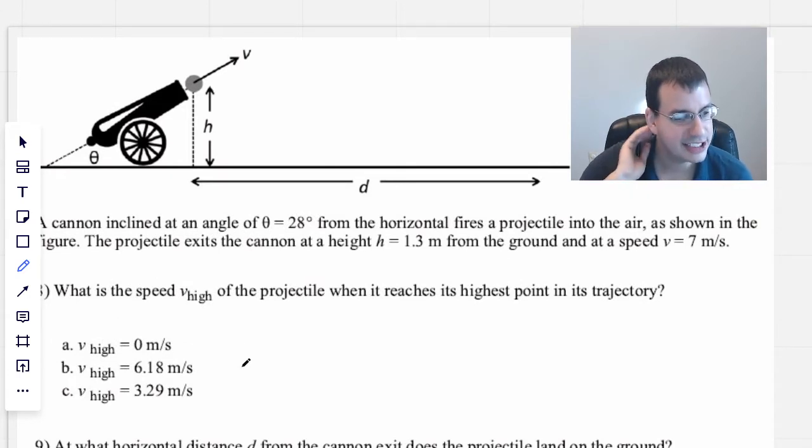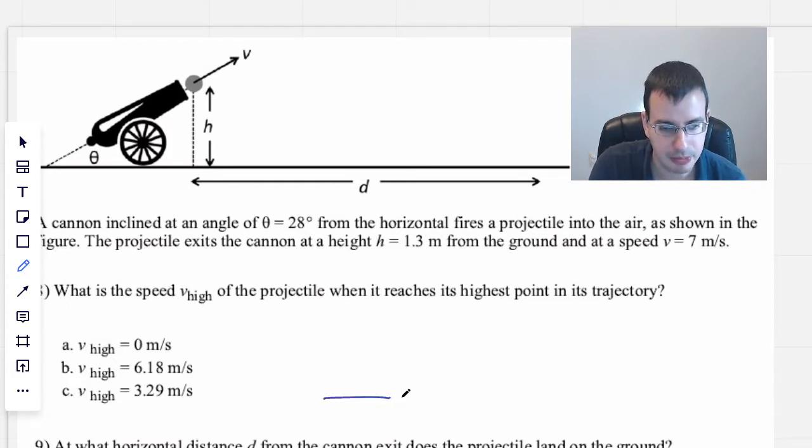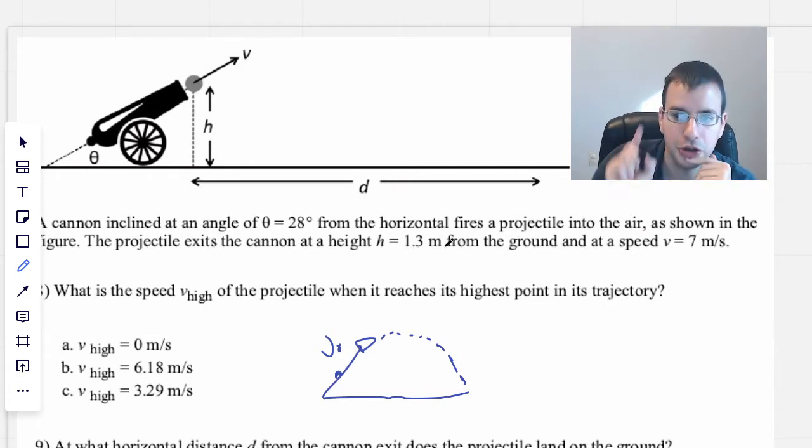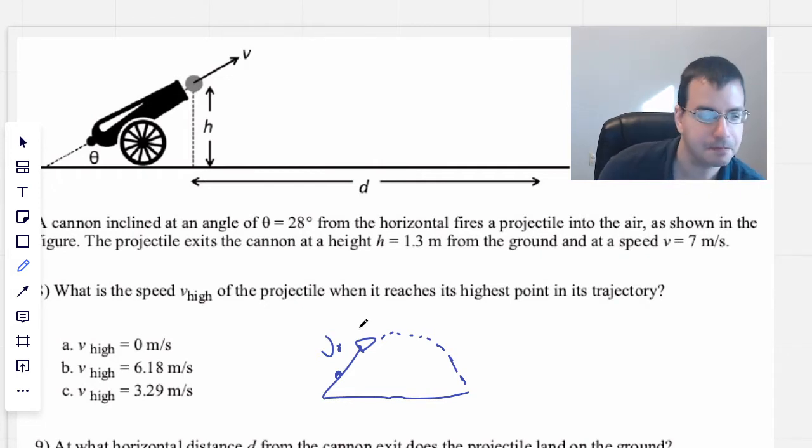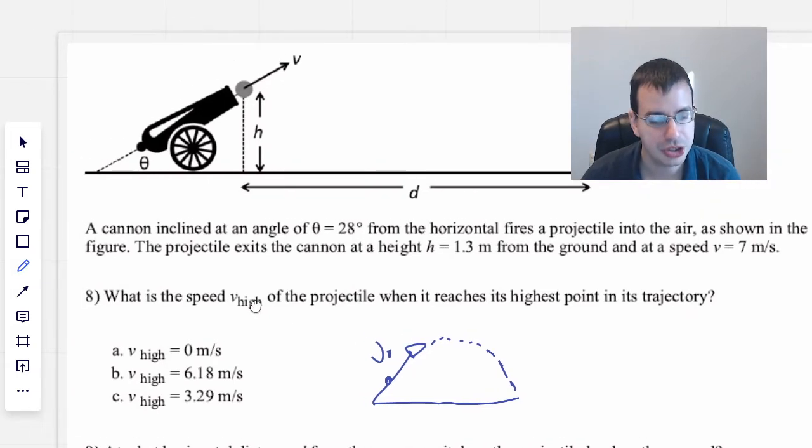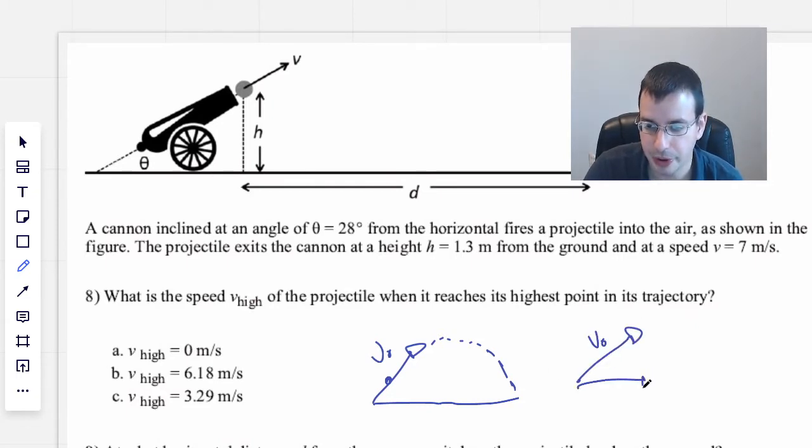So what is the speed of the projectile when it reaches the highest point in its trajectory? First thing we're going to do is draw a picture. I like their picture, but I'm going to draw it a little bit differently. So we have V0, which actually starts about there, and then comes like this.